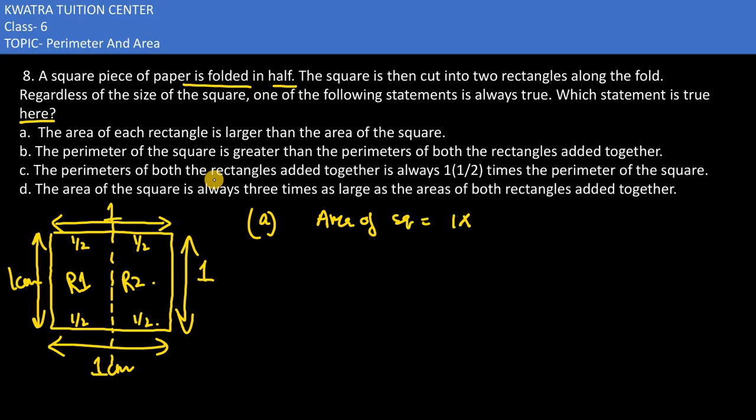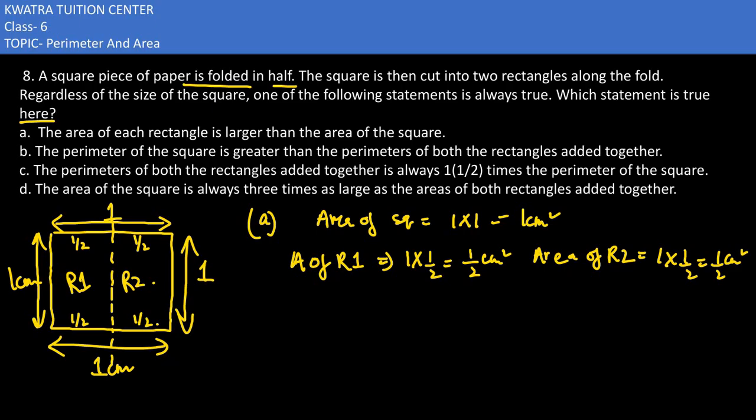So that would be 1 into 1, 1 cm square. And now we have area of rectangle 1. Area of rectangle 1 would be 1 into half, which is half only. And area of rectangle 2, that is nothing but 1 into half, which is half cm. So in both situations, we have half cm square. So what do we understand? That area of each rectangle is not larger than the area of square. So the first statement is incorrect.